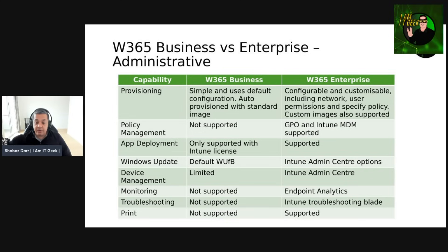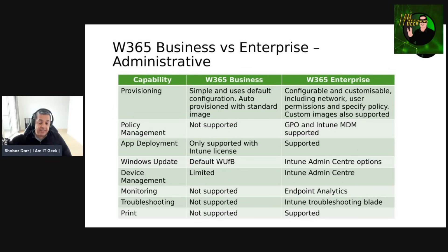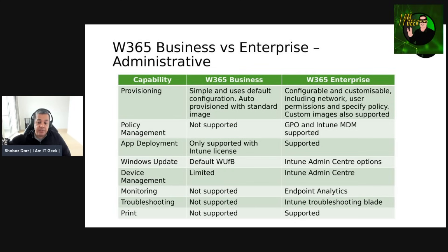App deployment with Business is only supported with an Intune license, but with W365 Enterprise it's fully supported. Windows Update capability with Business uses a default Windows Update for Business setting, but with Enterprise it's the Intune admin center options — so any options in there to update devices you can use. Device management is very limited with Business; in my opinion it's a capability for businesses with very limited IT support. For Enterprise you're using the Intune admin center for device management, and we've seen how to do that already.